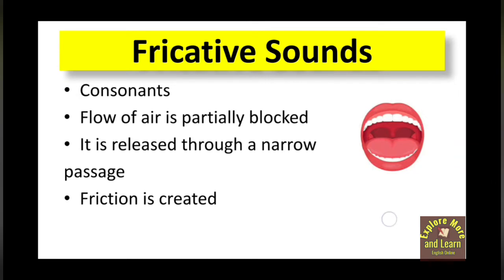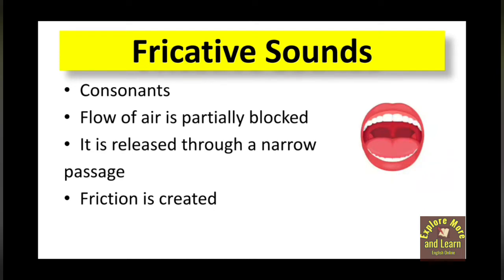A friction is created, and this is how fricative sounds are produced. This partial blockage is created between two articulators — they can be the lower lip and upper teeth, any part of the tongue and upper teeth, or any part of the tongue and teeth ridge, etc. Then air is released through a narrow passage and the friction is created.